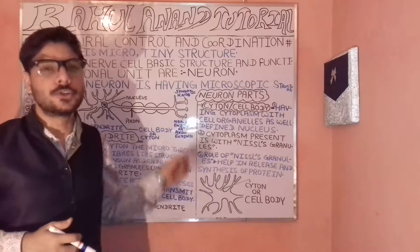When we talk about the particular structure of the neuron, it can only be viewed with the help of a microscope — these are known as microscopic bodies. When we talk about the parts of the neuron, these are divided into three broad categories: the cytone, the dendrite, and the axon.